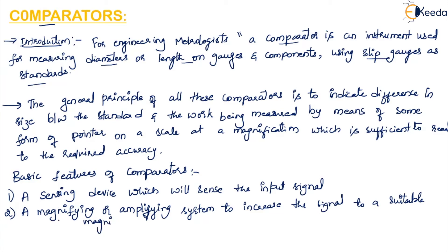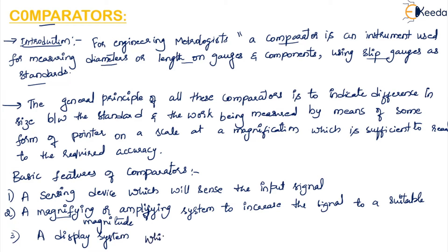Based on this magnifying or amplifying system, comparators are further classified as mechanical, optical, pneumatic or hydraulic, and electronic. The third feature is a display system, which is usually a scale and a pointer, that utilizes the amplified signal and provides a readable output.